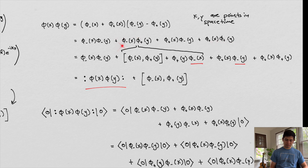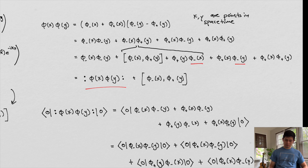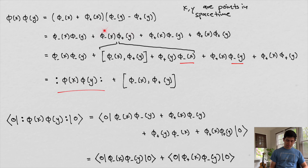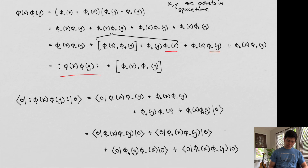We can show that expanding this is equal to this. We have plus, minus, minus, plus — and we can see that this relationship here is the same thing as this relationship here. What we find is that everything has a negative sign here, a negative sign here, a negative sign here, and then these two guys are positive.